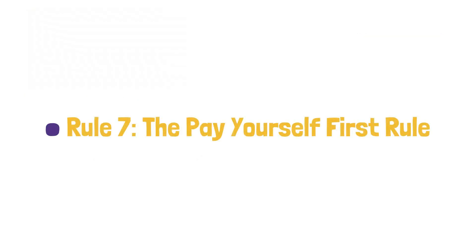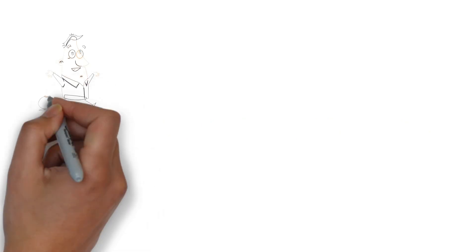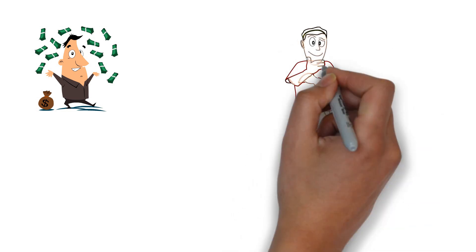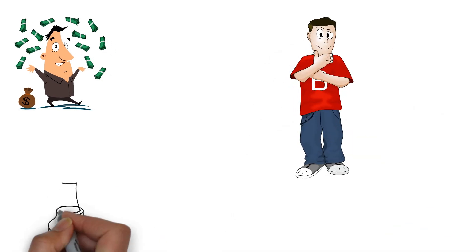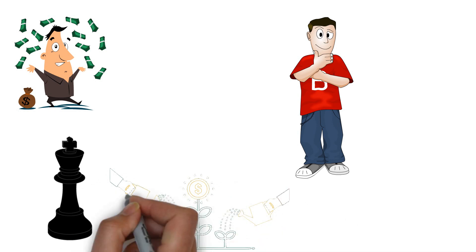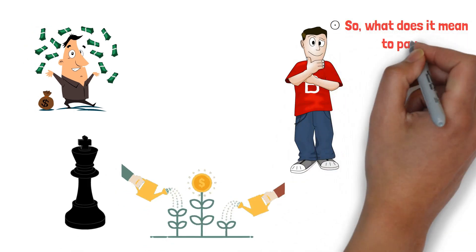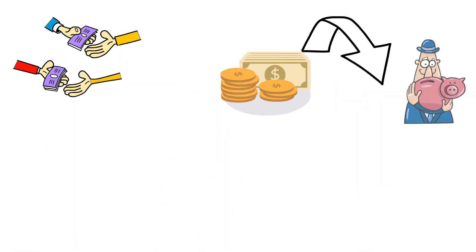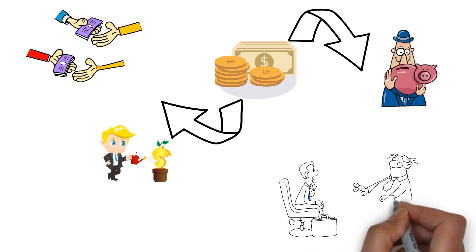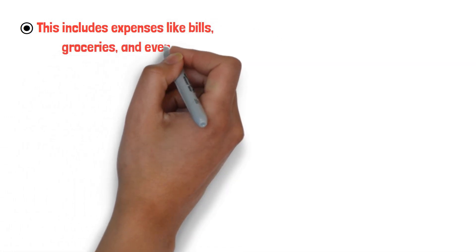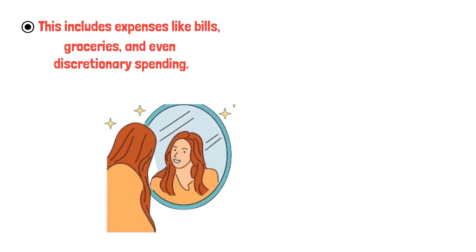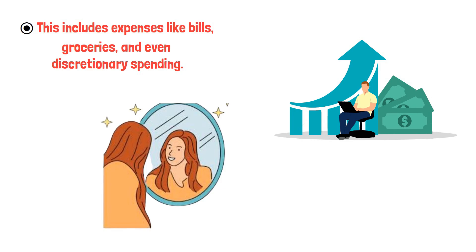Rule number seven, the pay yourself first rule. One of the most potent money rules the wealthy live by is paying yourself first. This rule might sound simple, but it's a game changer when building wealth and securing your financial future. So, what does it mean to pay yourself first? Well, paying yourself first means setting aside a portion of your income for savings and investments before spending money on anything else. This includes expenses like bills, groceries, and even discretionary spending.